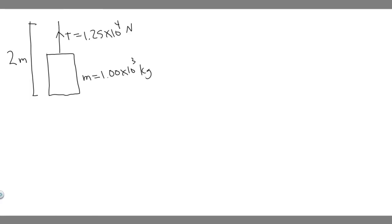In this problem, we're told a cable exerts a constant upward tension of magnitude 1.25 times 10 to the 4th newtons on a 1 times 10 to the 3 kilogram elevator as it rises through a vertical distance of 2 meters. Part A: find the work done by the tension force on the elevator. Part B: find the work done by the force of gravity on the elevator.